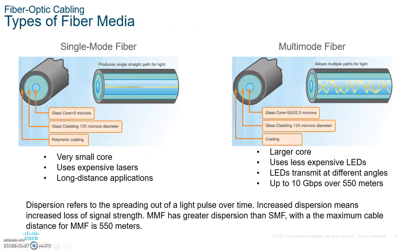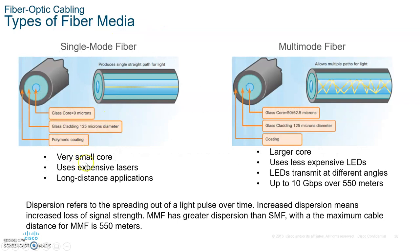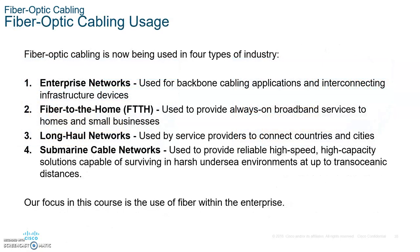There are two types of fiber modes: single mode and multi-mode. Single mode transmits one signal right down the center of the core — this is mostly used for voice. Multi-mode has a thicker core and can send multiple signals taking different paths. Single mode has a smaller core. Fiber optic cable is used in four areas of the industry: enterprise networks, fiber at home such as Fios with Verizon, long-haul networks, and submarine cable networks.